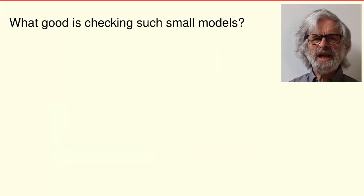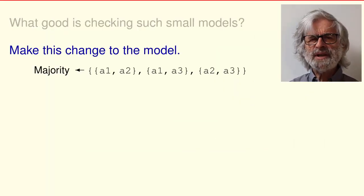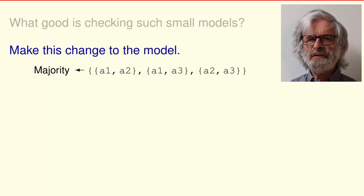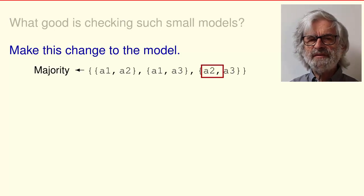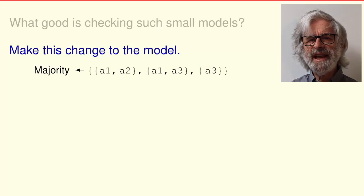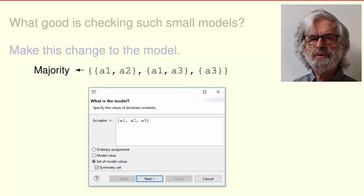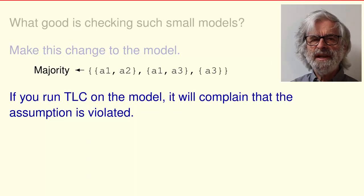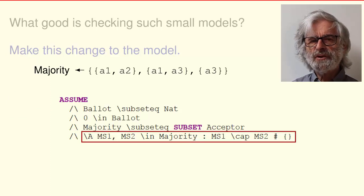What good is checking such small models? To answer that question, make this change to the value the model assigns to majority. Delete this element of an element of the set. The expression is no longer symmetric in A1, A2, and A3. So we have to change the assignment to acceptor so it's no longer a symmetry set. Now if you run TLC on the model, it will complain that this assumption is violated because this assertion is no longer true. So we have to comment it out.